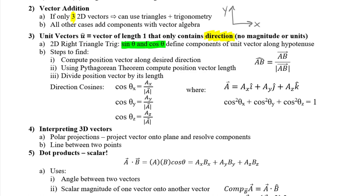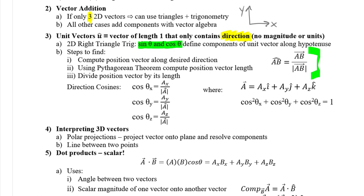For three-dimensional unit vectors, we find the position vector, find its scalar length, and divide the position vector by that scalar length. We can also use direction cosine angles — the scalar component divided by the length of the full vector, which is the same operation as forming a unit vector. These direction cosine angles are complex 3D angles that wrap from the positive x, y, and z axes to a vector.